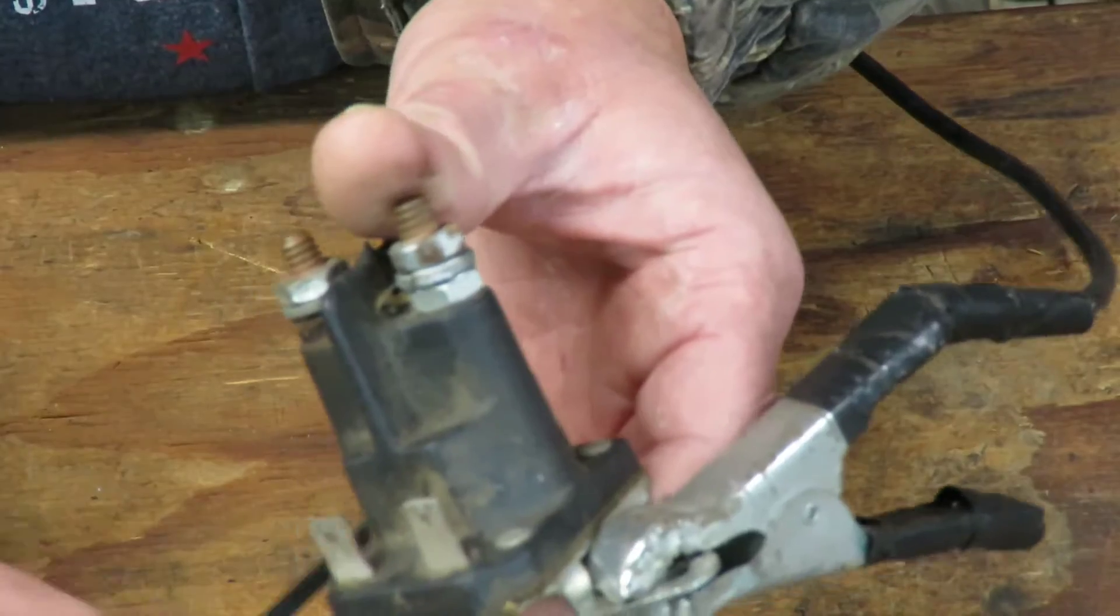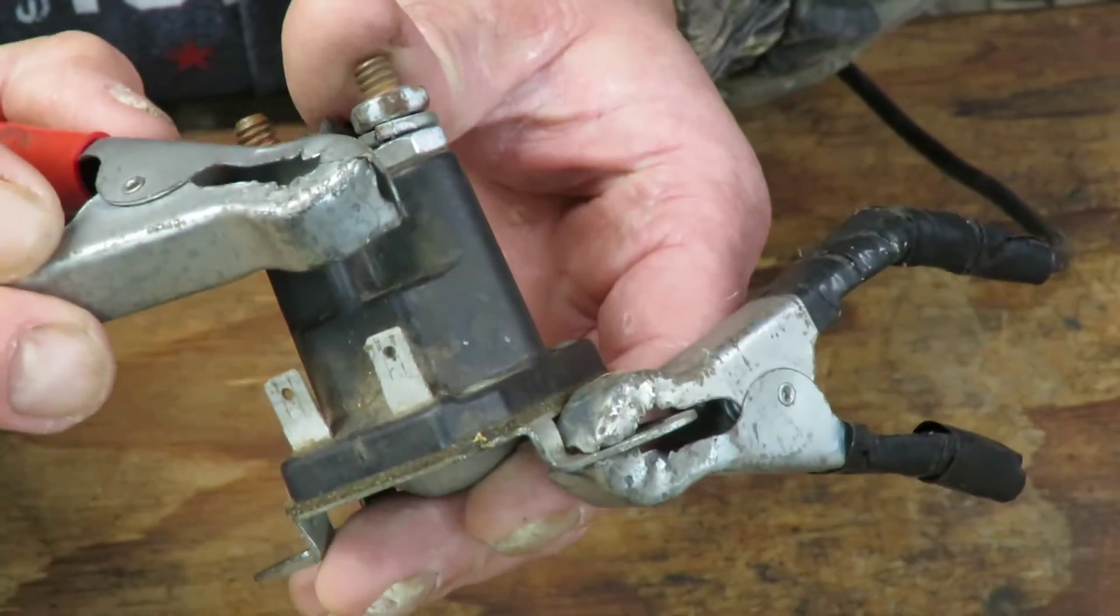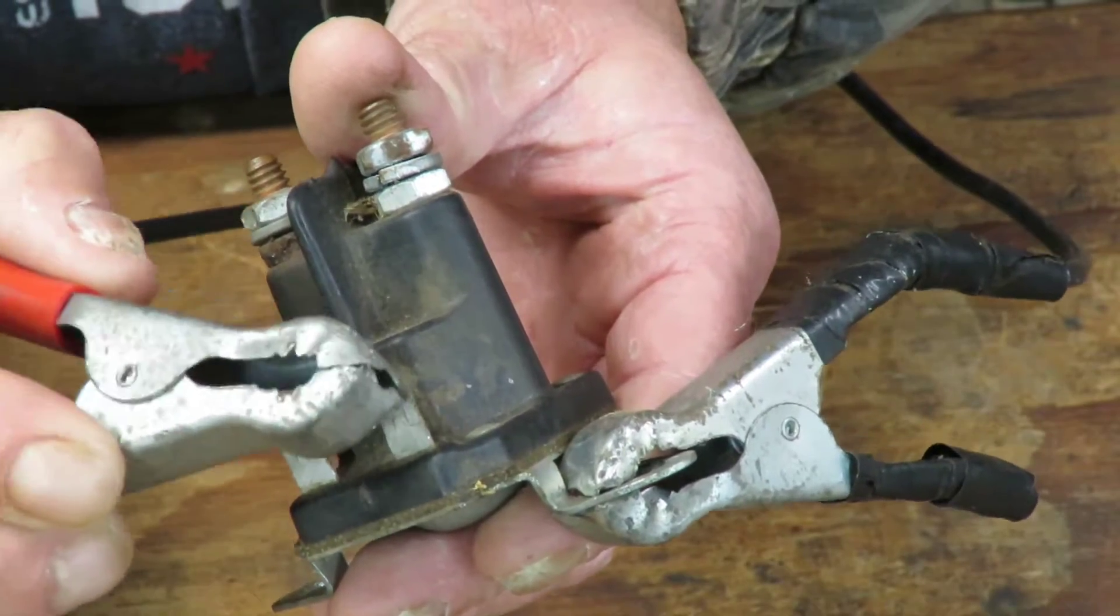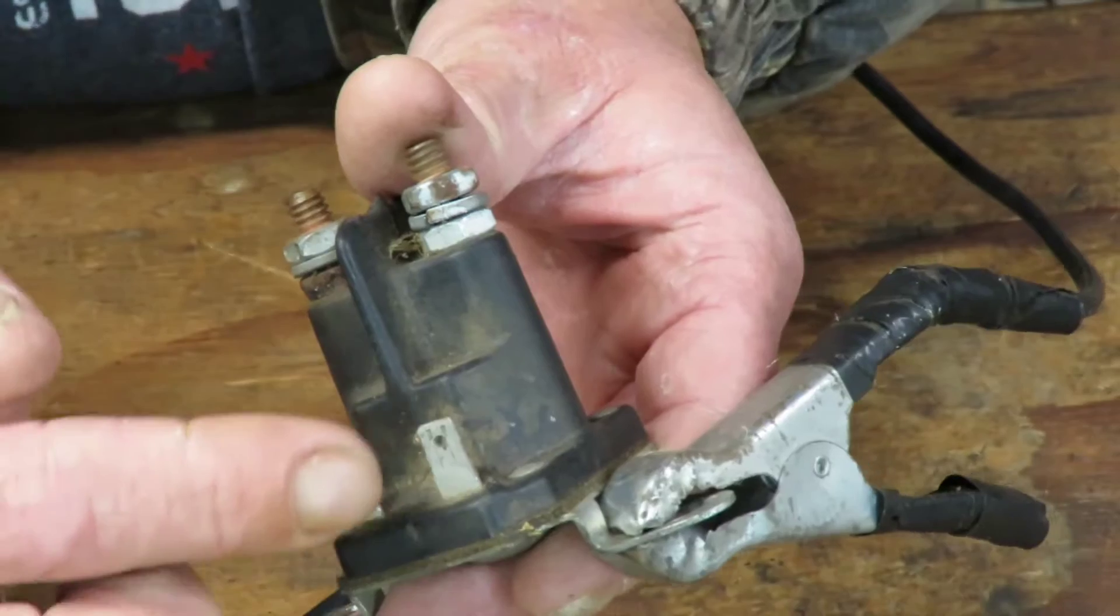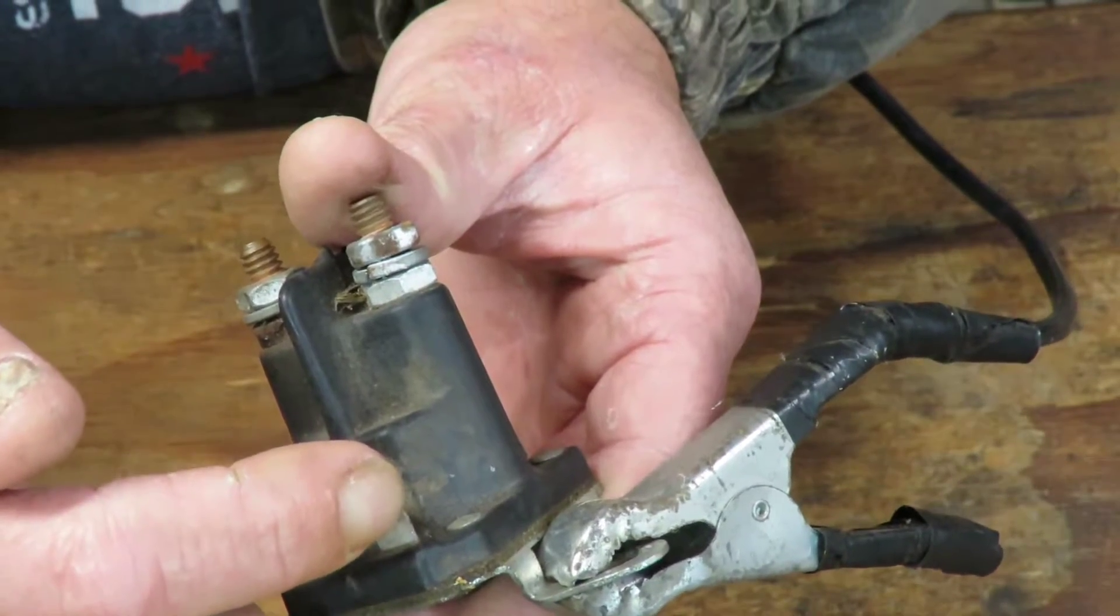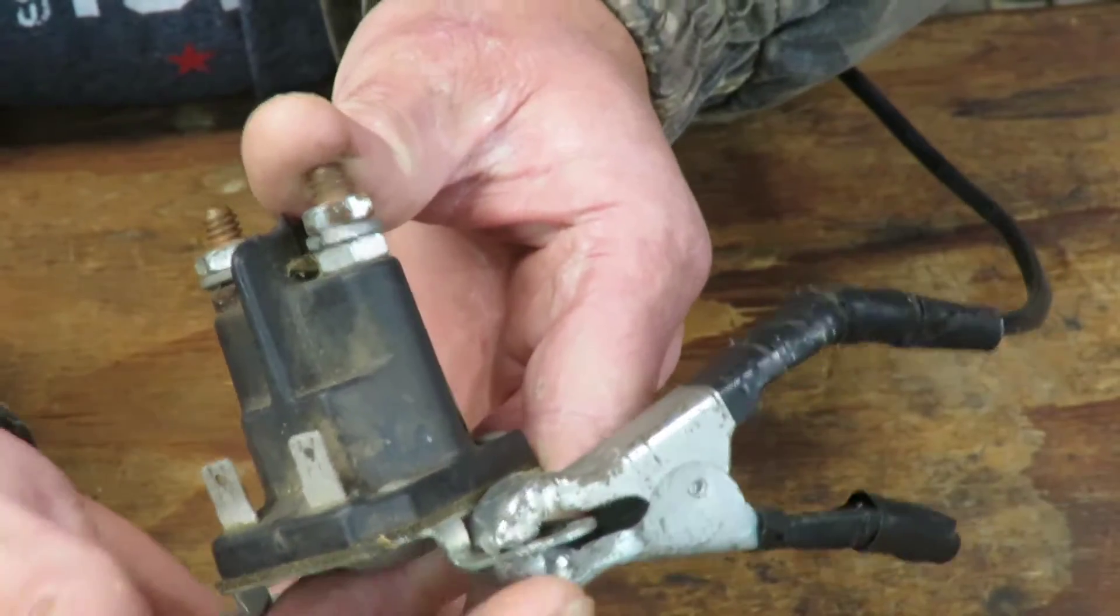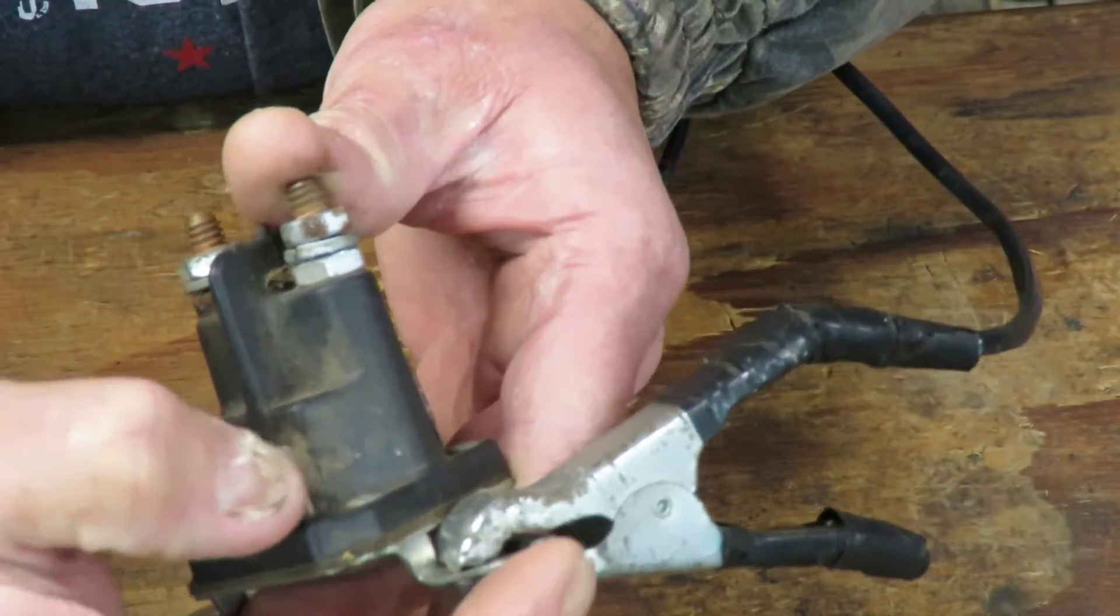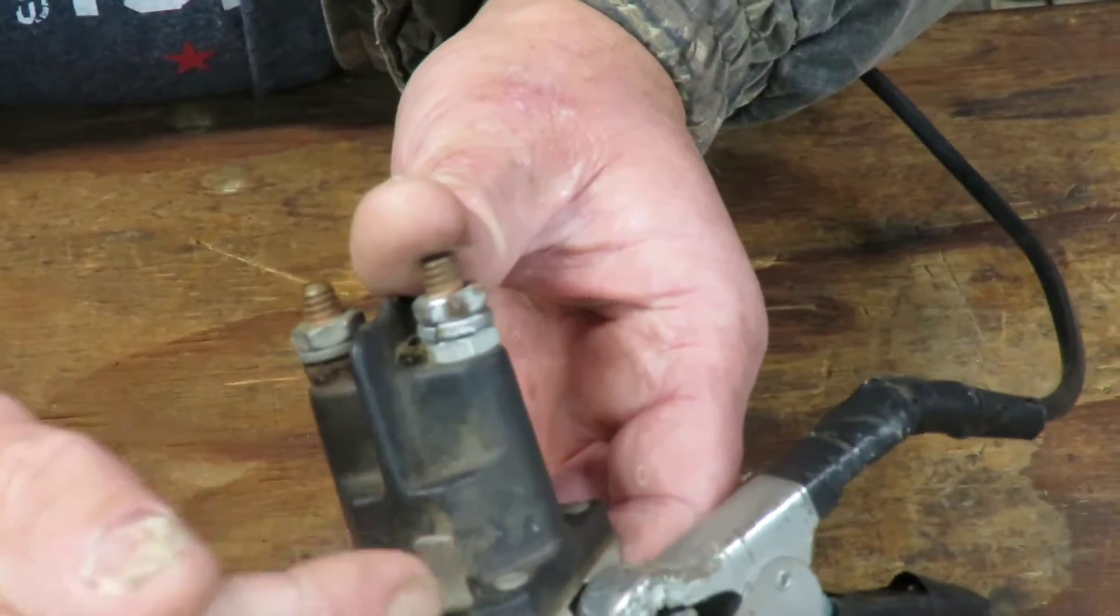And then touch it to that positive to this post right here. So basically this terminal that is missing is connected to this bracket, so it grounds through the bracket to where this one grounds on this.